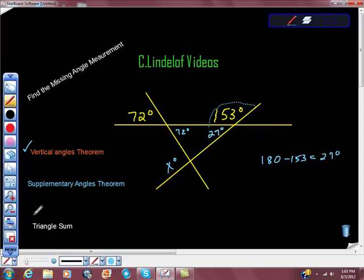We know from triangle sum theorem that if we add all three of the angles of any triangle, we're going to get 180 degrees, so I'm going to do that. I'm going to call this angle A, and I'm going to say that 72 degrees plus 27 degrees plus A degrees is equal to 180.